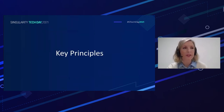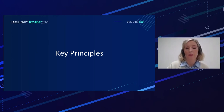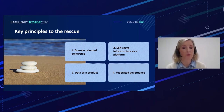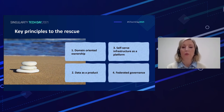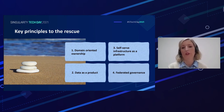Now let's explore the key principles. The data mesh approach, as originally outlined, mentions four key principles: domain-oriented ownership, data as a product, self-service shared infrastructure, and federated governance. The first two principles come quite together and inform the other two. Principles three and four are more technological approaches or technical solutions that come hand in hand with the first two.